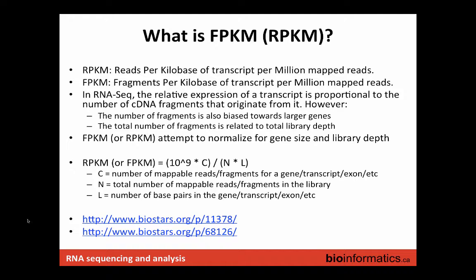Another obvious problem is that the total number of fragments is related to total library depth, which is arbitrary — you can just keep sequencing. So if you sequence condition A to a million reads and condition B to two million reads and don't account for that, any differential expression estimate between those two conditions is going to be flawed. FPKM attempts to account for both of these issues simultaneously.